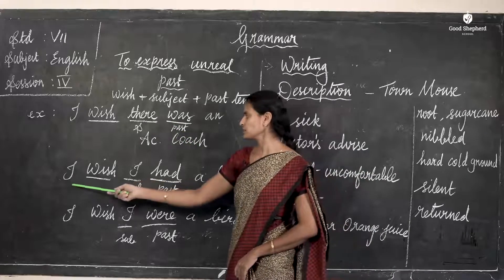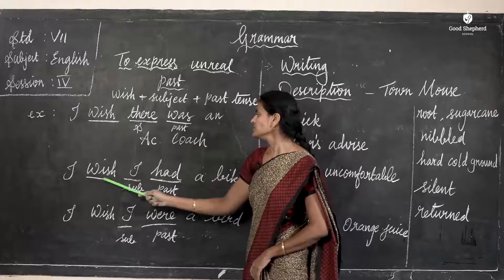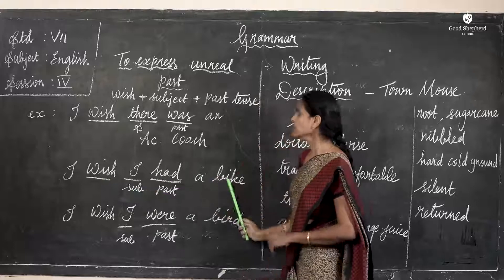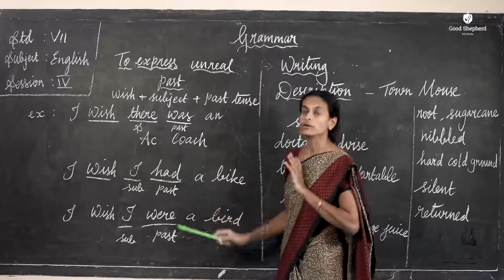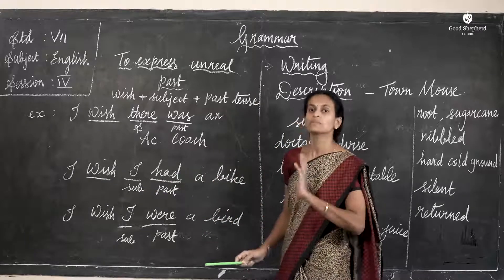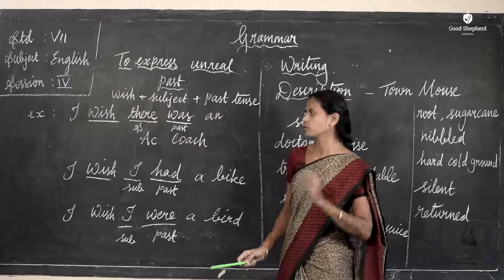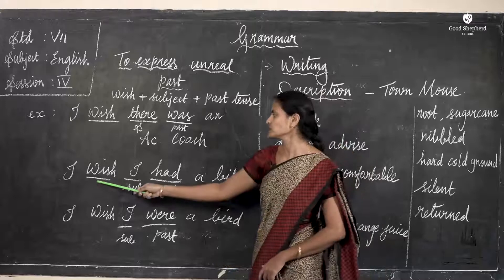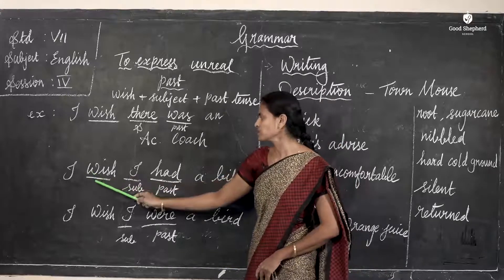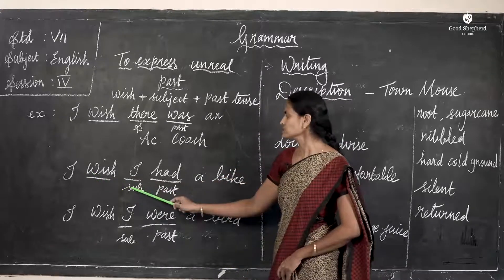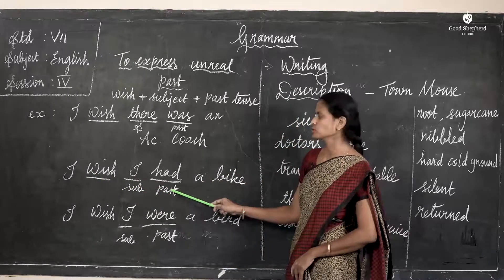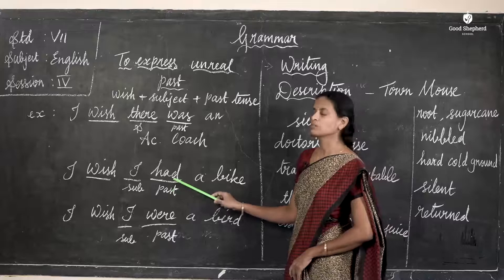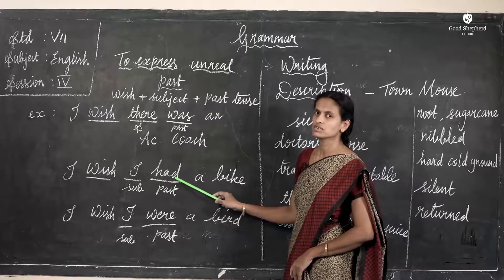Another example: 'I wish I had a bike.' I don't have a bike but I wished for it. So the formula is: wish, then the subject, then the past tense. 'Had' is the past tense here.